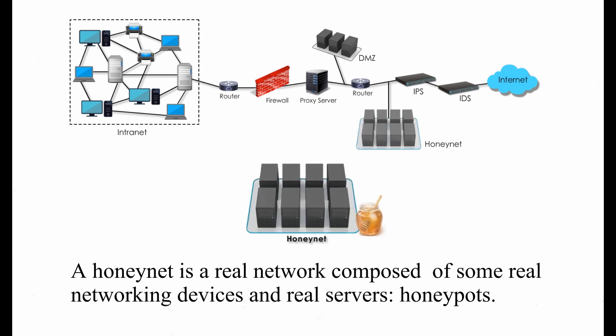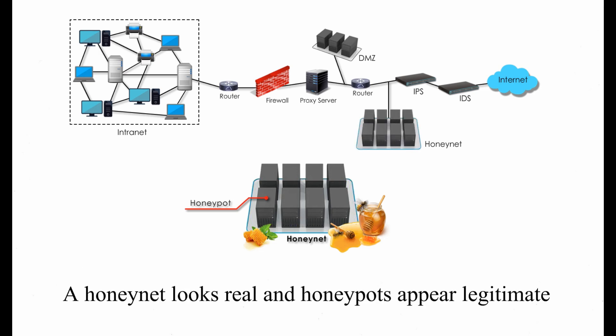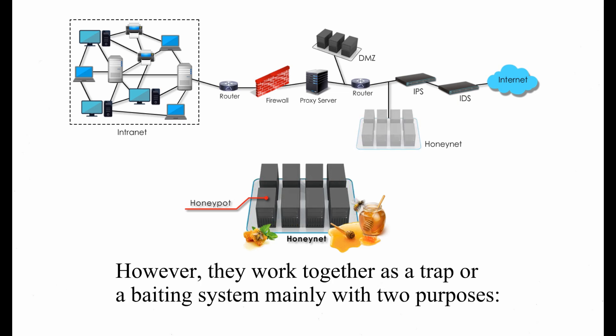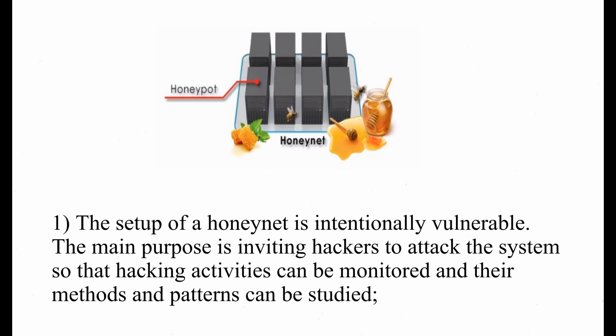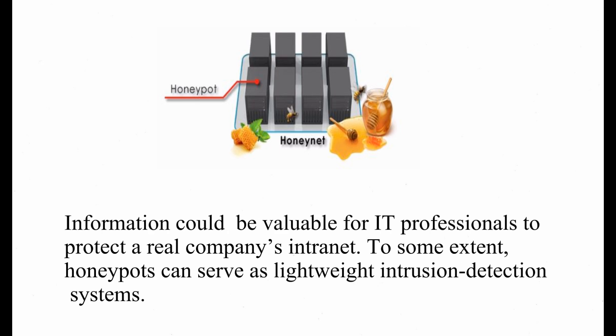A HoneyNet is a real network composed of some real networking devices and real servers, which we call honey pots. A HoneyNet looks real and honey pots appear legitimate. However, they work together as a trap or a baiting system mainly with two purposes. One: the setup of the HoneyNet is intentionally vulnerable. The main purpose is inviting hackers to attack the system so that their hacking activities can be monitored and their methods and patterns can be studied. Information could be valuable and helpful for IT professionals to protect a real company intranet.